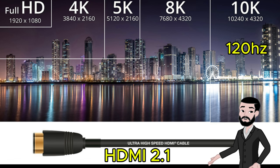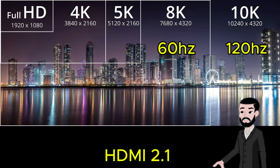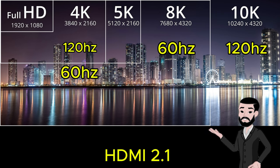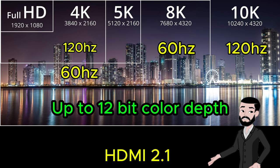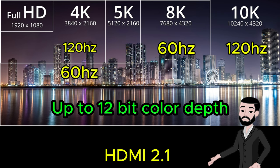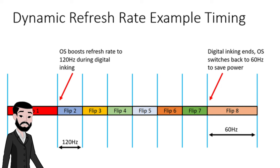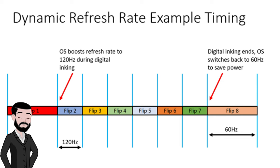HDMI 2.1 supports up to 10K resolution at 120Hz, though this is more theoretical as very few devices can utilize it. It also supports 8K at 60Hz, 4K at 120Hz, and 4K at 60Hz with 12-bit color depth, as well as dynamic refresh rates for smoother motion and reduced latency, which is beneficial for gaming and interactive displays.